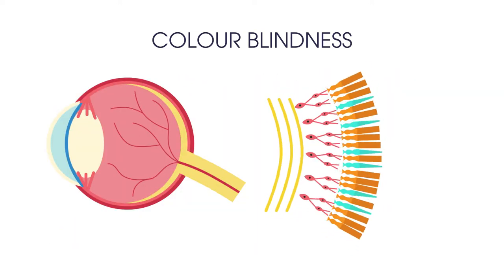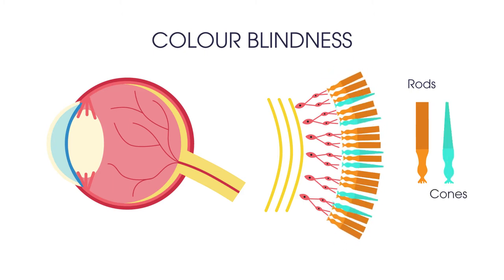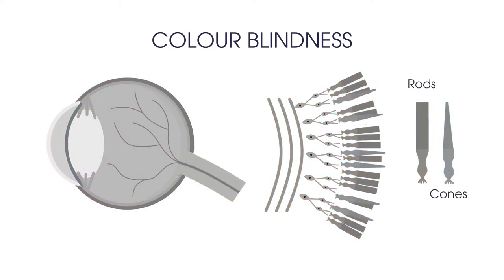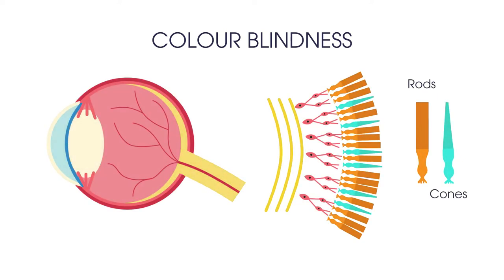The receptor cells in the retina of your eye are called rods and cones. Rods detect light intensity and cones detect colours. Rod cells are used when there is little light, and cone cells help you see colours. The cones in colour blind individuals are either fewer in number or simply absent.